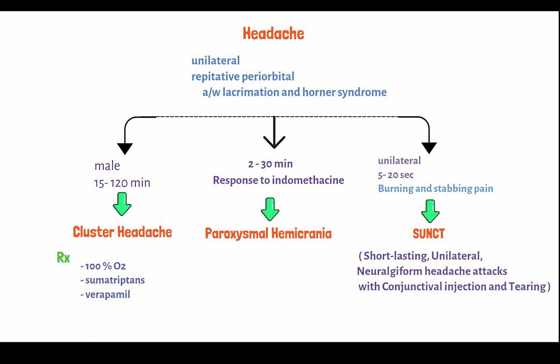So in unilateral periorbital headache with lacrimation, it can be cluster headache, paroxysmal hemicrania, or SUNCT.